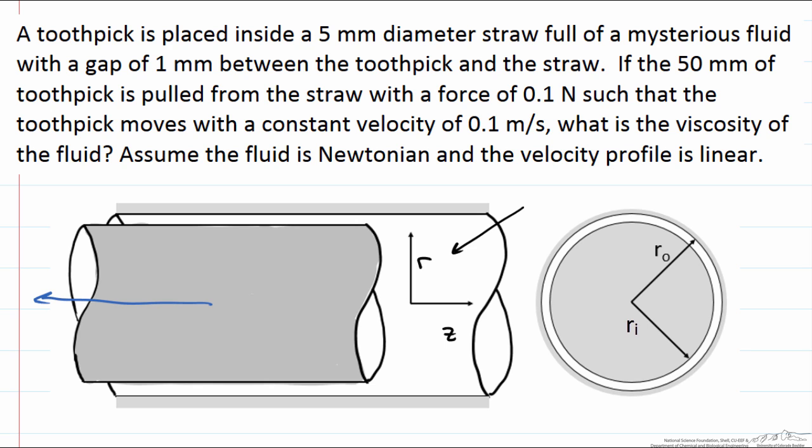We know that the length that we are pulling out is 50 mm. We are told that the diameter of the straw is 5 mm and there is a gap of 1 mm on each side. So although probably not drawn to scale here we have a 3 mm diameter toothpick.